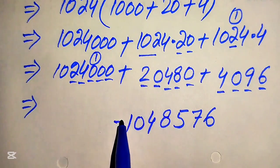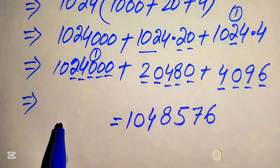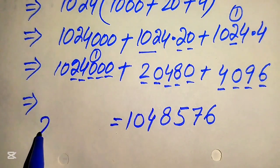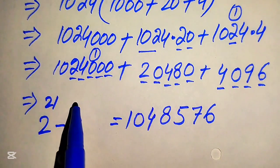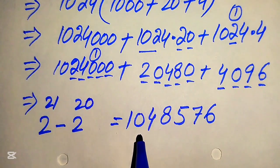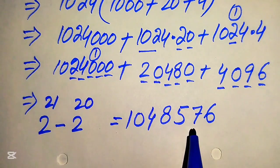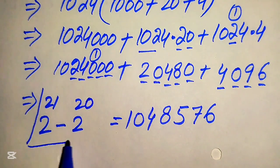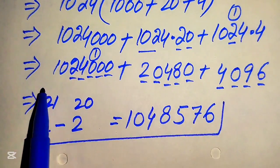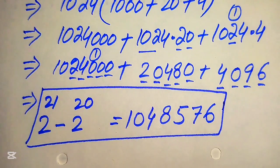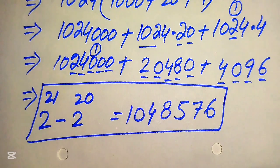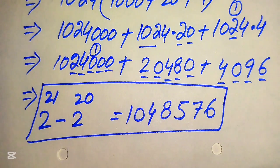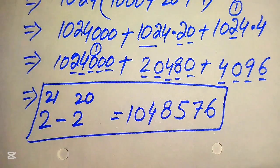Finally, we have the simplified form of the given expression: 2 to the power of 21 minus 2 to the power of 20 equals 1048576. This is our final answer. Thank you so much for watching this video. I hope you like this method, but if you have another method in mind, please do not hesitate to write it in the comment section. Thank you so much for watching — please subscribe to my channel for more exciting videos.